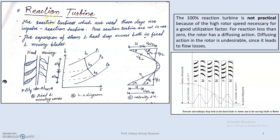For reaction turbines there are fixed and moving blades which are aerofoil-shaped, while in the case of impulse turbines the moving blades are profile-shaped. Whenever steam flows from inlet to outlet — from fixed blade to moving blade — its enthalpy continuously decreases. As steam expands from high pressure to low pressure over fixed and moving blades, the enthalpy drops across both. For reaction turbines generally it is 50% in the fixed blade and 50% in the moving blade, but in actual cases around 55–60% of the pressure/enthalpy drop occurs over the fixed blade and the remaining over the moving blade.